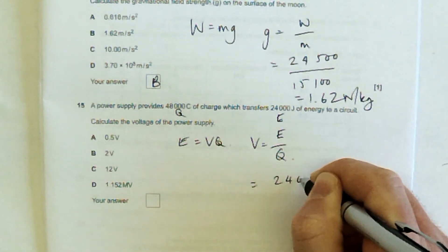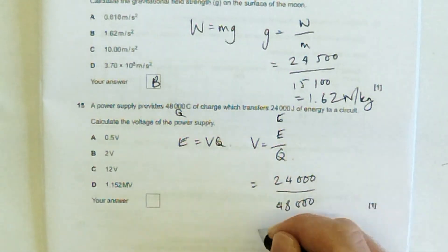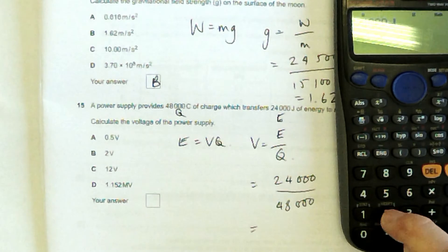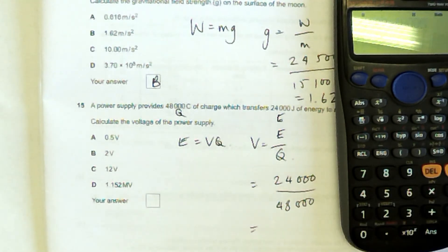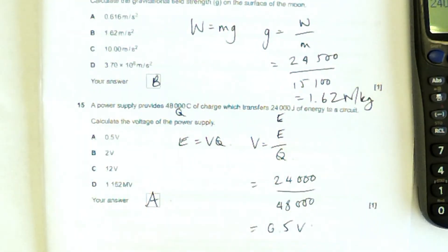So, I just need to do energy over charge, 24,000 over 48,000. How much energy does the charge have is the voltage. 0.5 volts. A. I hope that was helpful to you. That's the multiple choice one.